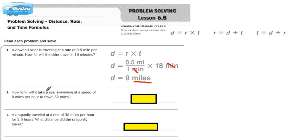Let's take a look at number two. How long will it take a seal swimming at a speed of 8 miles per hour to travel 52 miles? So 52 miles, let's kind of label things. This is a distance, this is a rate, and the reason why we know that is because we have the something per something, and then how long, that's the time.